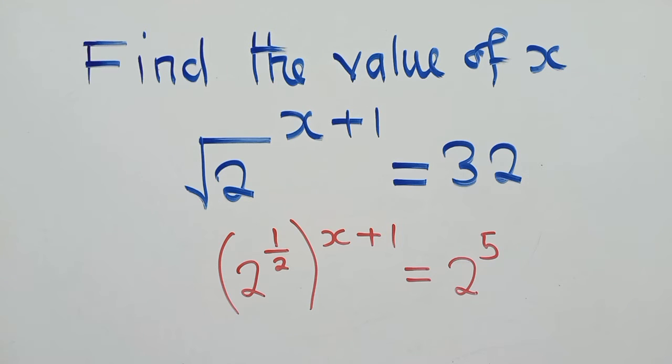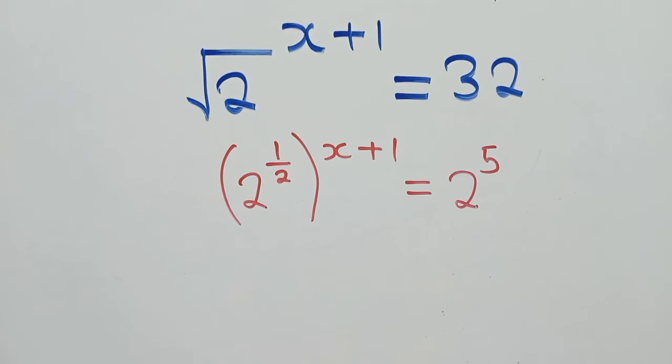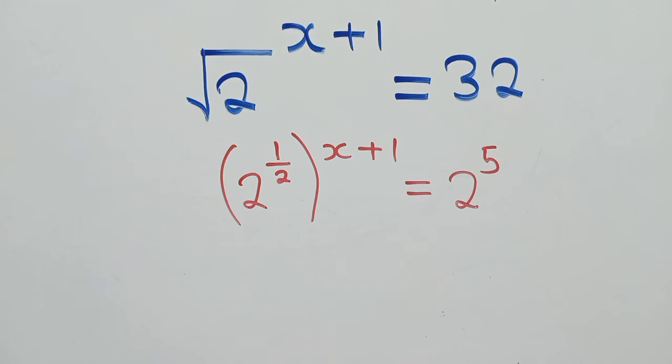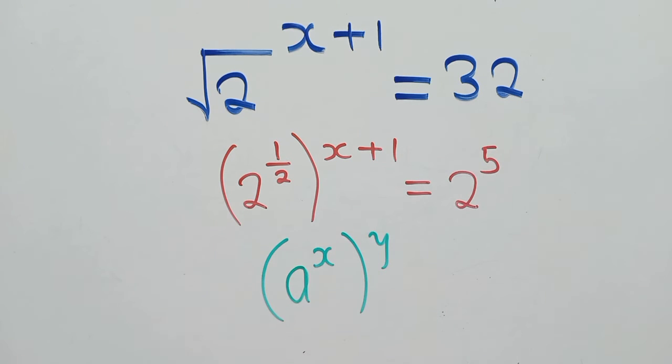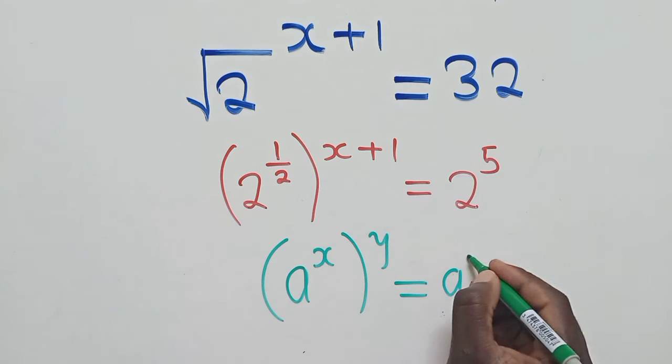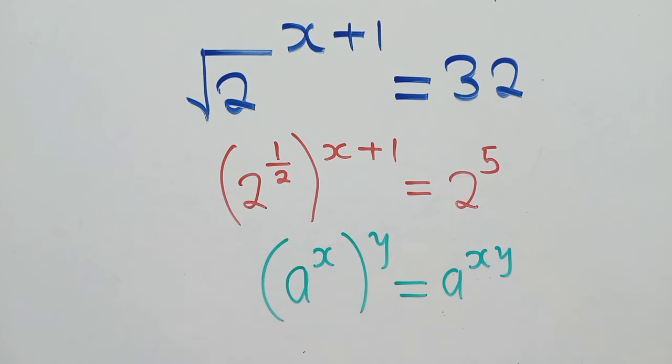So now, from this stage, we can take advantage of the one property of indices, which says that when you've got a power x and the power here, power y, like it is this and this, they are powers. So power, power, you multiply the powers, so it will be x times y. Same base, you maintain the base, you just multiply the powers. So this is what we need to apply right here.